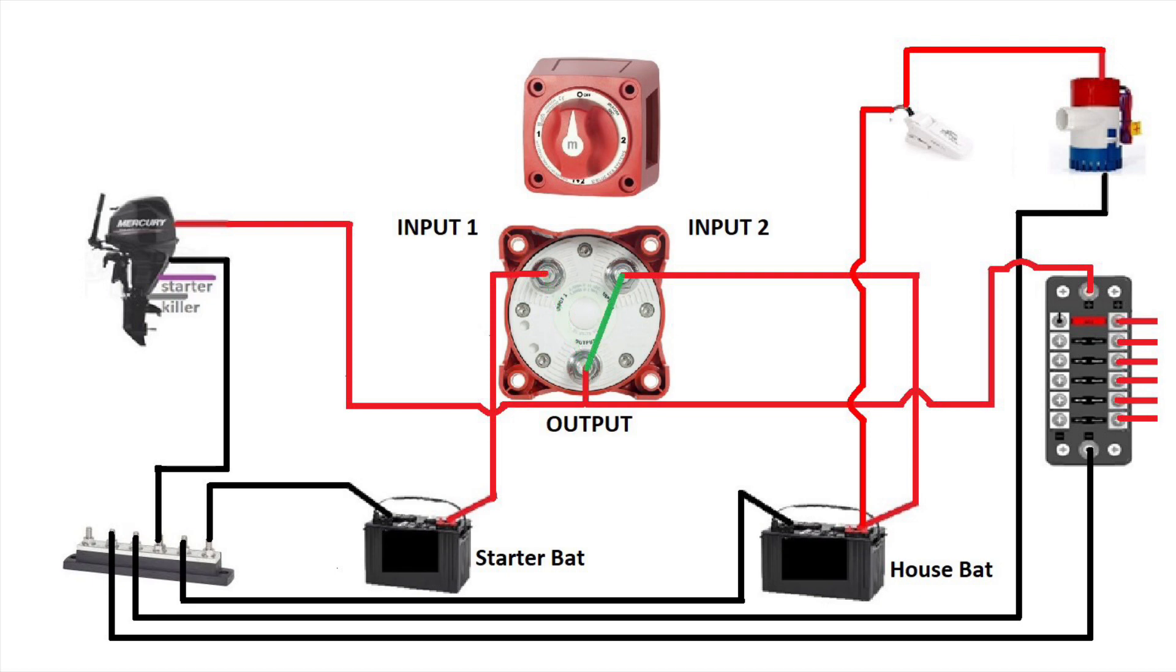Once your engine is started, you don't need your cranking battery anymore, so you can switch your battery switch to input two. And the rest of your equipment will run on the deep cycle battery. But now, since you're on input two, your engine is only recharging the deep cycle battery.